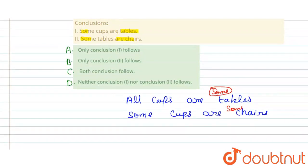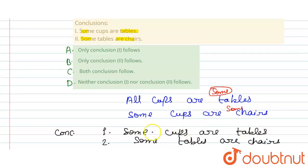Okay, let's talk about the conclusions. So first conclusion: some cups are tables. Okay, and second one is some tables are chairs.